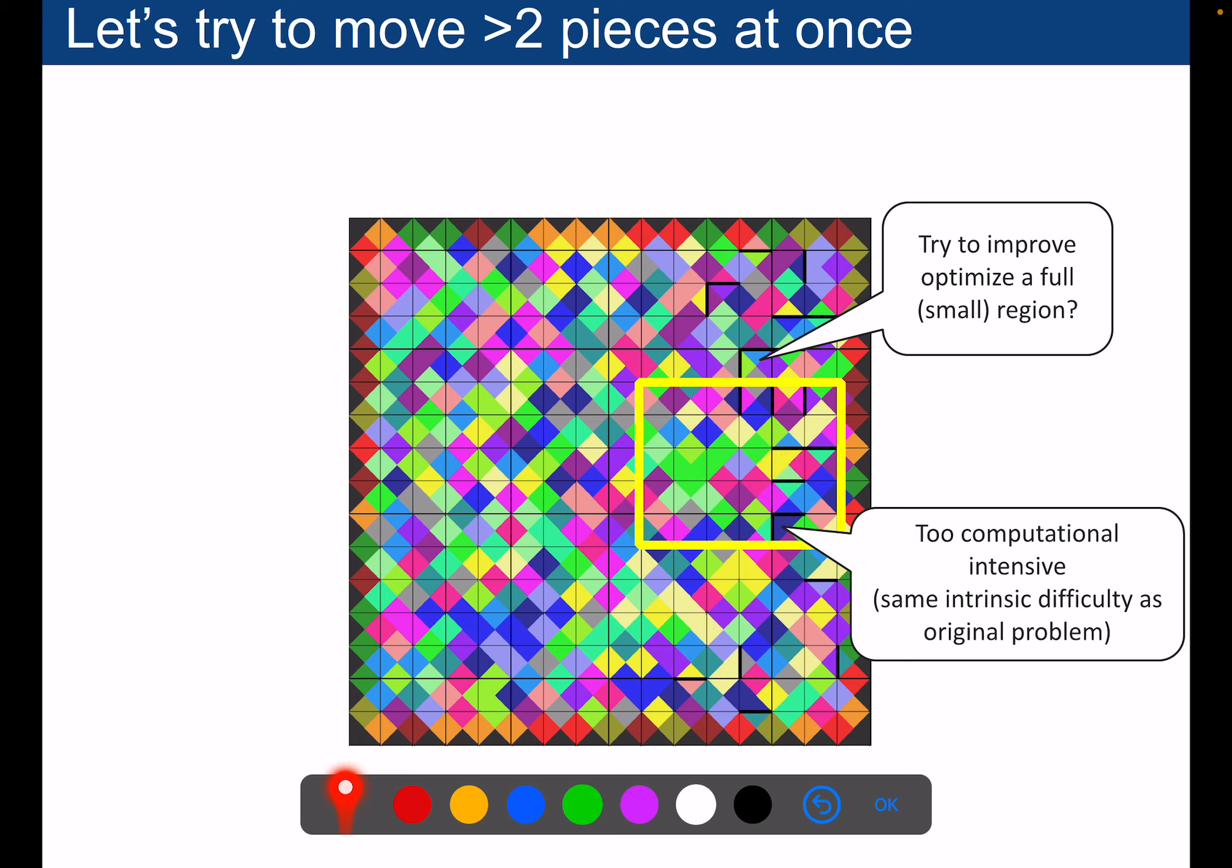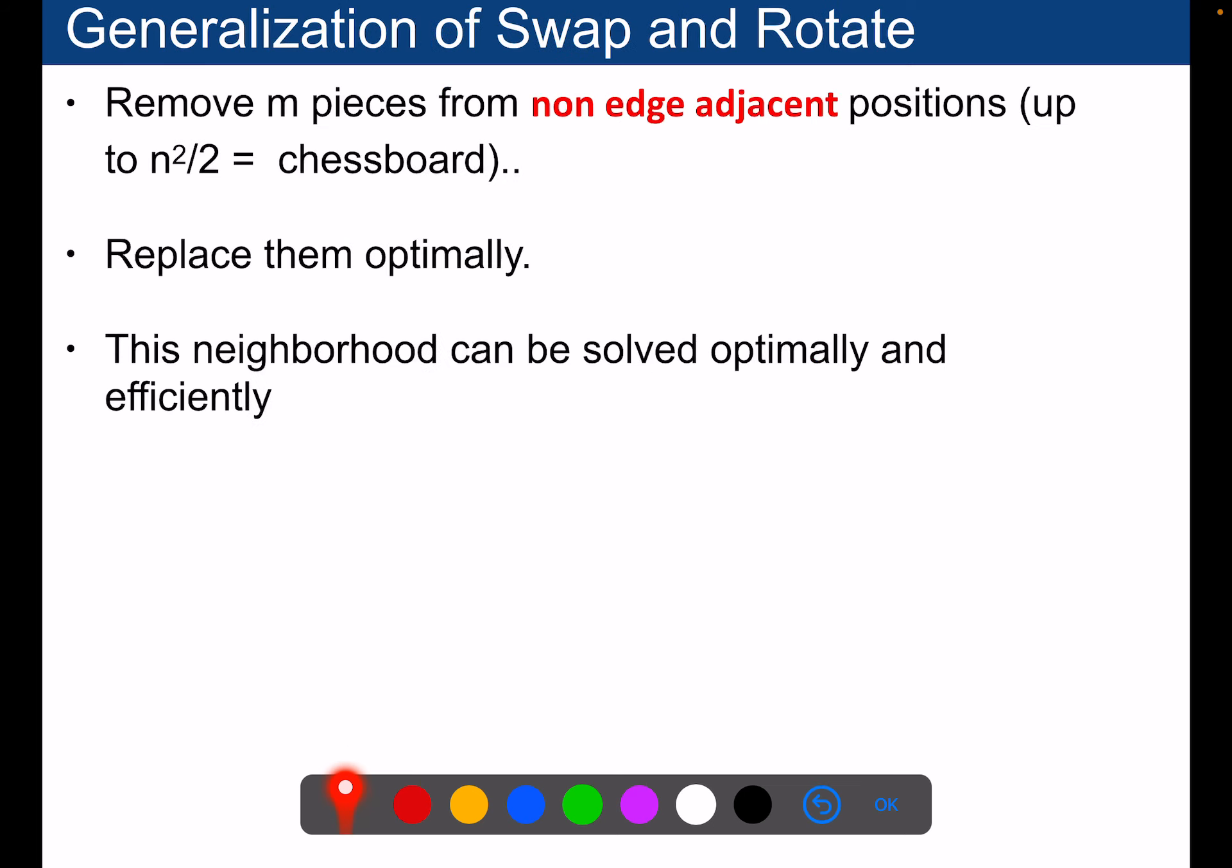Because you need to solve this sub problem, but it might also be large. So we will prefer instead a generalization of the swap and rotate move, but we will remove pieces from the board which are not adjacent positions and we will replace them all together optimally. This seems quite magic but it's possible in polynomial time to explore this neighborhood.